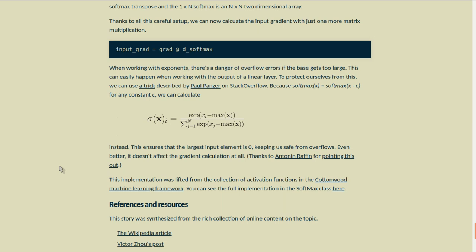Because softmax of x equals softmax of x minus c for any constant c, we can calculate the softmax of x minus the max of x instead. This ensures that the largest input element is zero, keeping us safe from overflows. And even better, it doesn't affect the gradient calculation at all. Thank you to Antonine Ruffin for pointing this out.